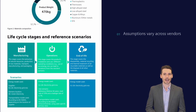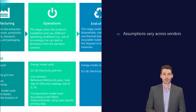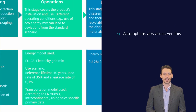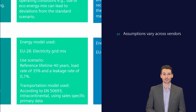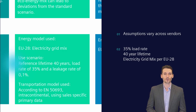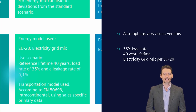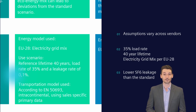Since the underlying assumptions may vary from vendor to vendor, it is critical to understand these differences when analyzing EPDs across manufacturers. Siemens has chosen operating assumptions based on decades of experience across a diverse global footprint, including a 35% load rate, an equipment lifetime of 40 years, an electricity grid mix as per EU28, and a 0.1% per year leakage per standard IEC 62271-1. It is important to note that the SF6 leakage from Siemens GIS is significantly lower than this standard value.